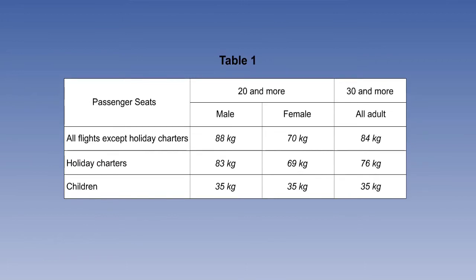Where an aeroplane has 20 passenger seats or more, Table 1 in EU Ops 1 is used. Note that it is split up into male and female columns, but as an alternative, the third column can be used for all adults if there are 30 or more passenger seats available. The holiday charter flight means a charter flight solely intended as an element of a holiday package.